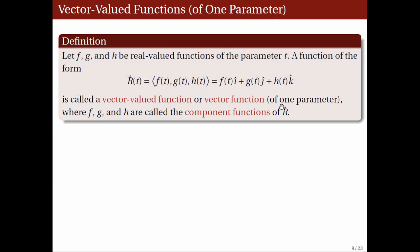The function is said to be of one parameter because its input, or its domain, is some set of real numbers. Here, f, g, and h are called the component functions of r.